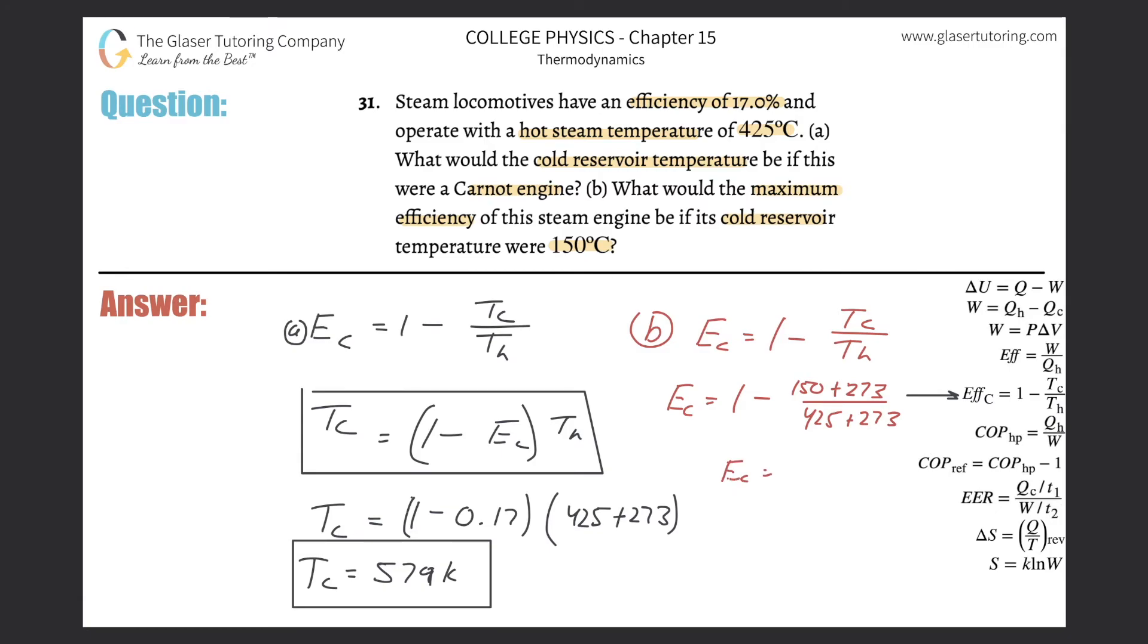So all we're going to simply do now is take 150 plus 273 divided by 425 plus 273, and then 1 minus that value. So it looks like it comes out to be approximately 0.394. So about 39% ish. And there you go.